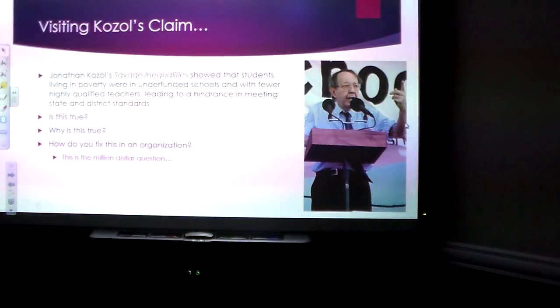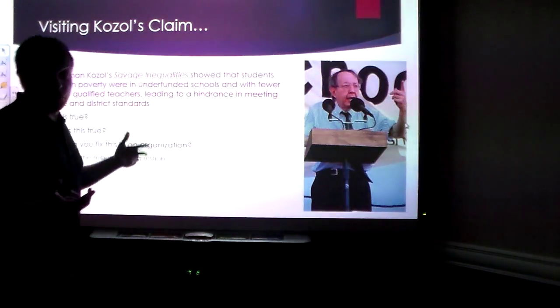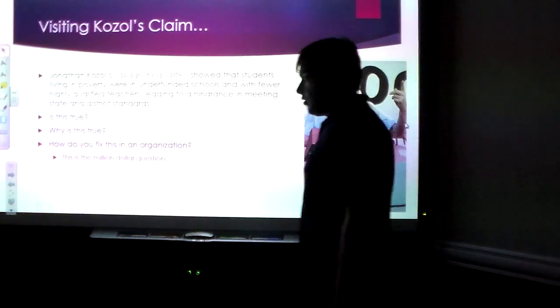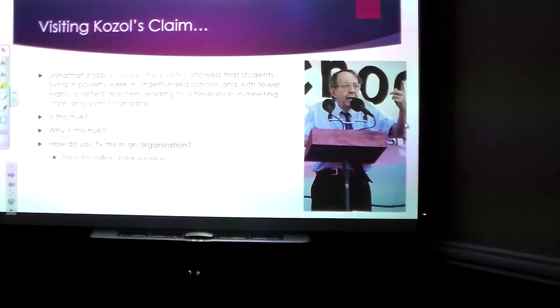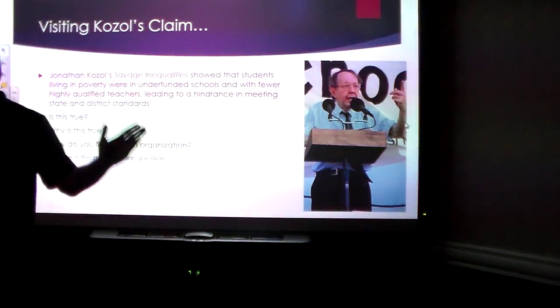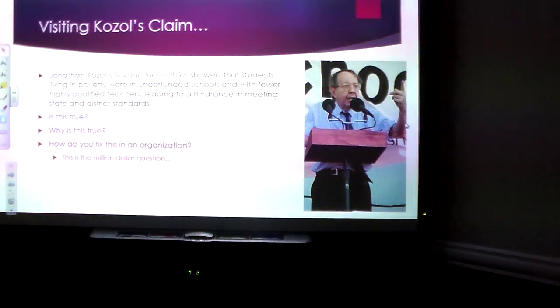So Savage Inequalities says students living in poverty were in underfunded schools, and with fewer highly qualified teachers, which led to a hindrance in meeting state and district standards. I would ask in class, let's argue why this is true. Every single person watching this knows this is true. Why is it true? Because individuals that are in these underfunded schools are looking probably to get out. Not a lot of them have a lot of organizational commitment to them. So how do you fix this? How do you fix this in education? You don't fix this in education, people. This is a regular, common occurrence, and if you find a way to fix this, you're going to be a multi-billionaire, not millionaire, and you'll never have to work a day again in your life, and I will still be teaching because I will never find a way to fix this, and I don't expect to fix this.